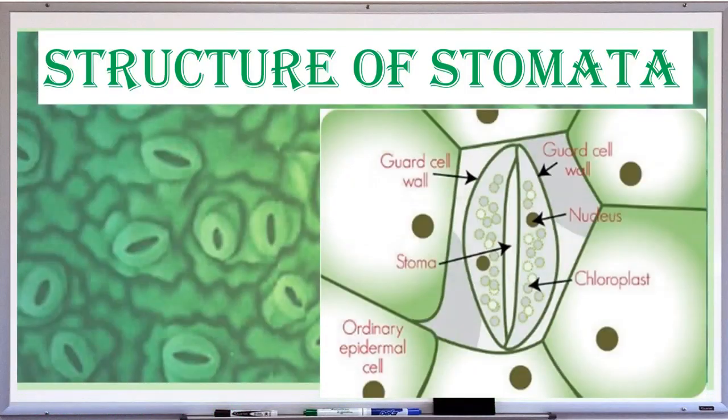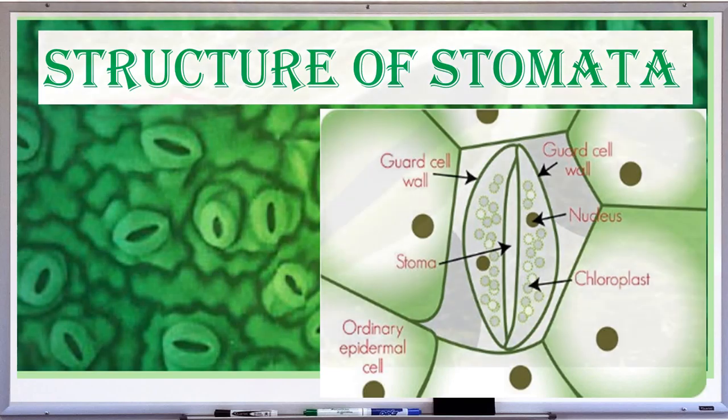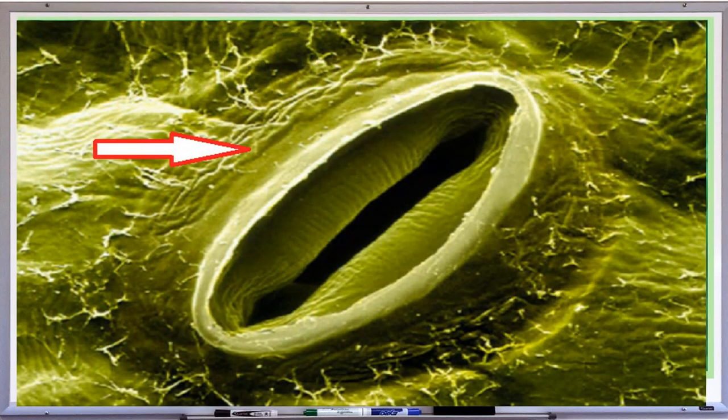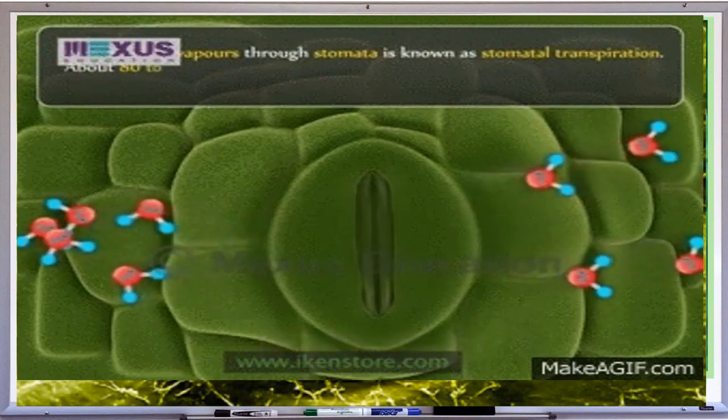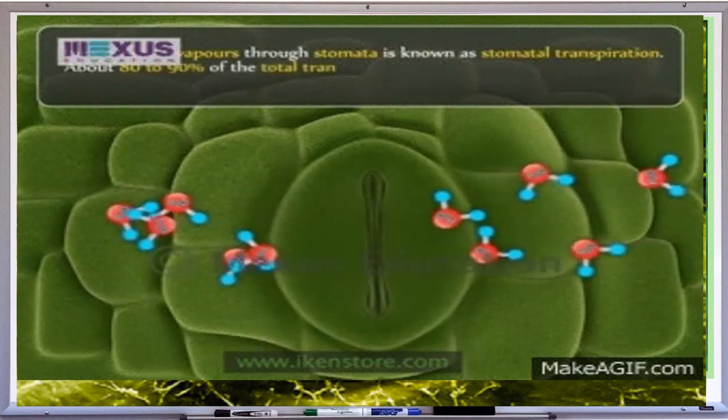The opening found on the leaf is called stomata. They are guarded by kidney or bean-shaped cells called guard cells. The stomata are open in the day and closed at night.